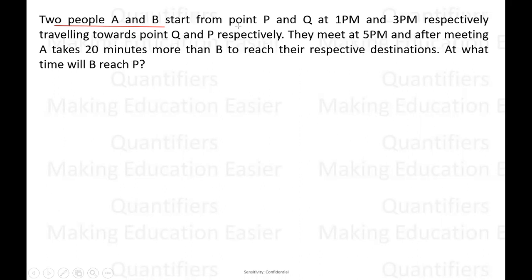There are two people A and B. They are starting from point P and Q at 1 PM and 3 PM respectively. They are traveling towards point Q and P respectively. So basically A starts from point P and is going towards point Q. B starts from point Q and is going towards point P. Further, it is given they meet at 5 PM and after meeting A takes 20 minutes more than B to reach their respective destinations. Question is at what time will B reach P? So first of all, let us try to understand this question with the help of a figure.